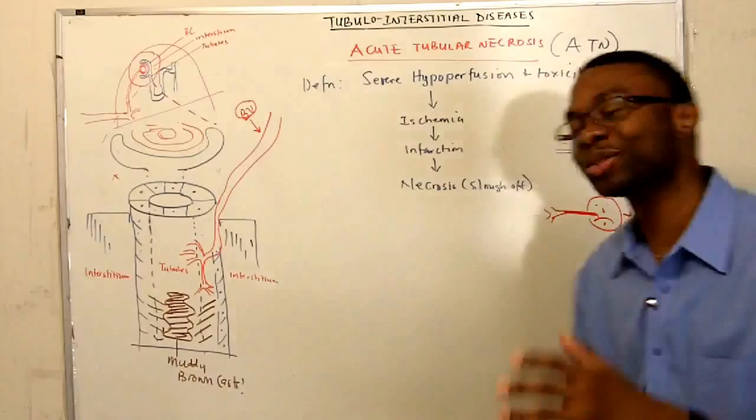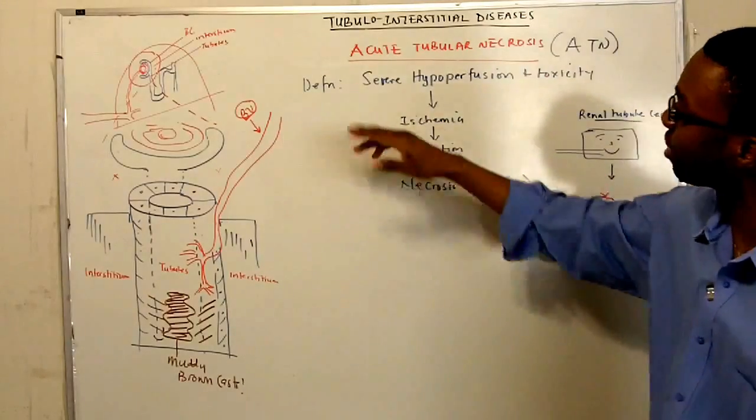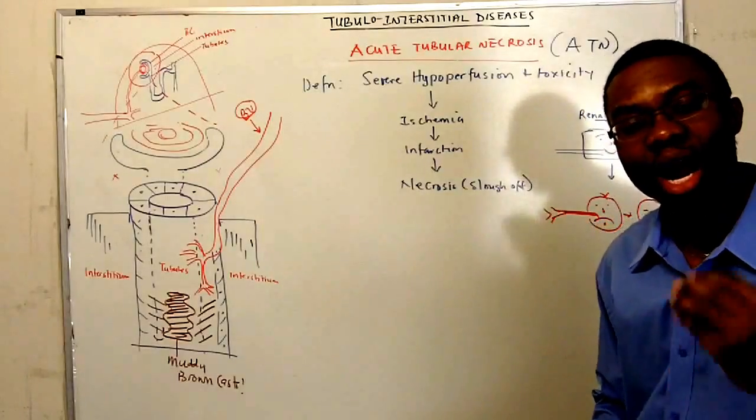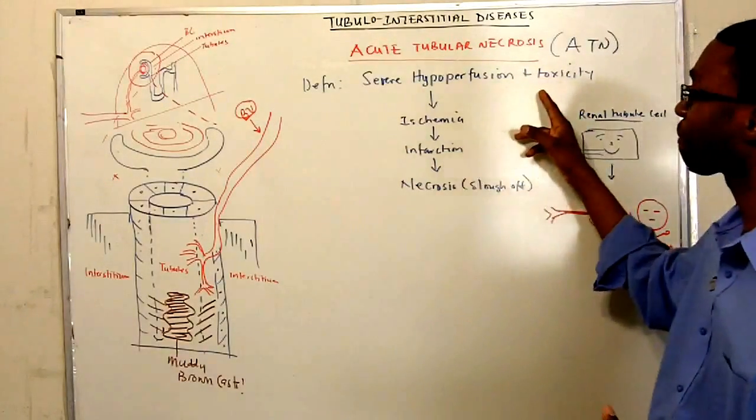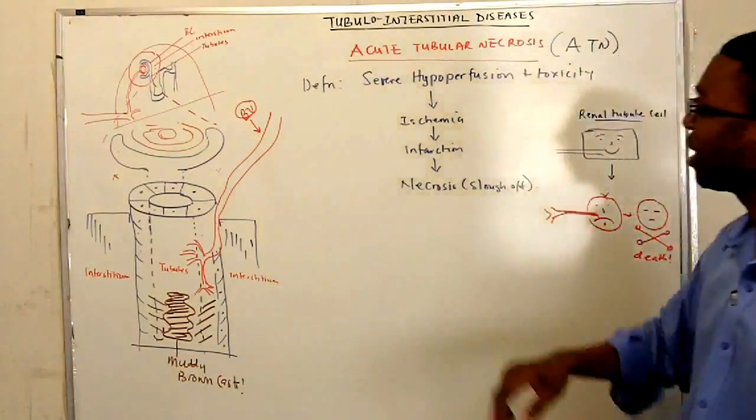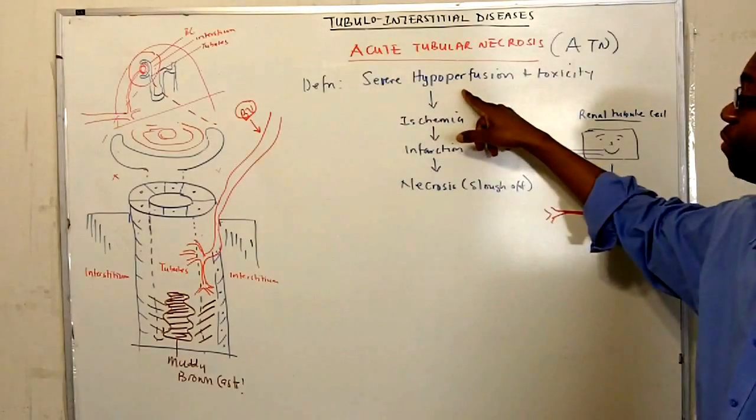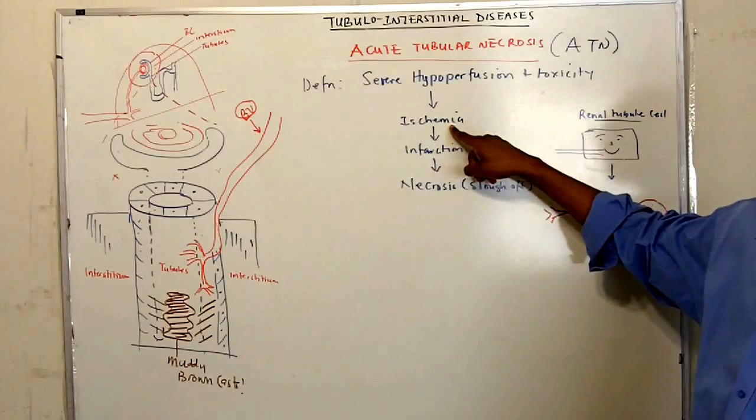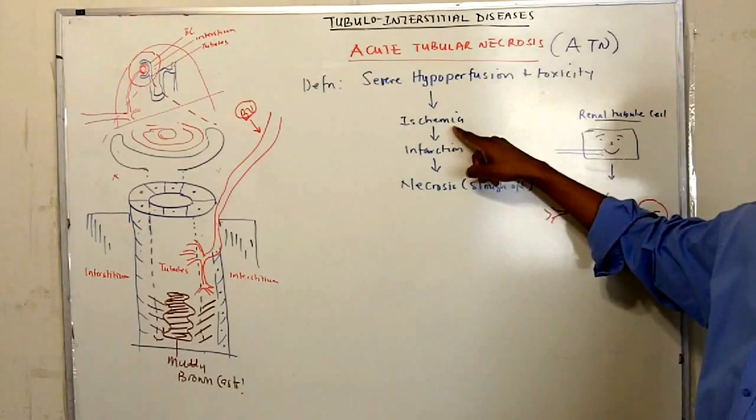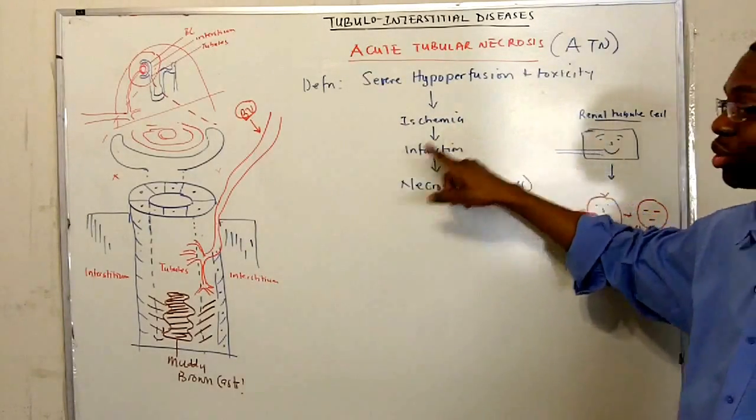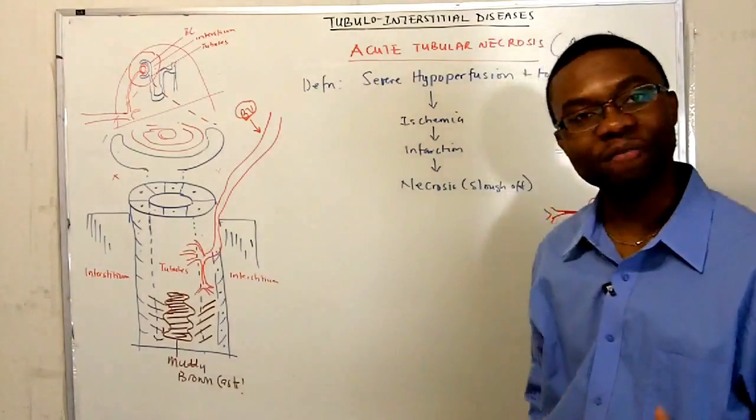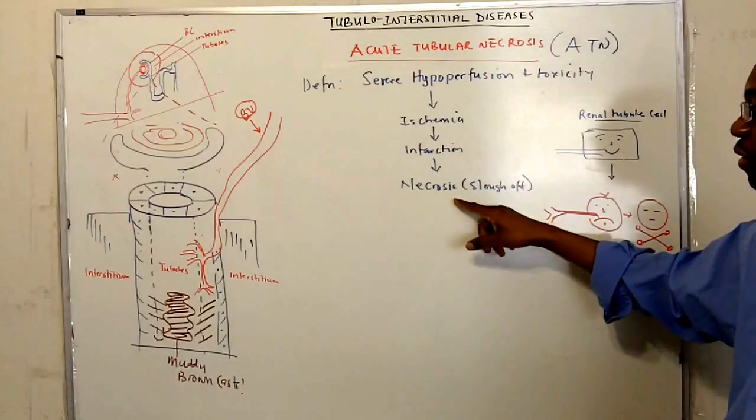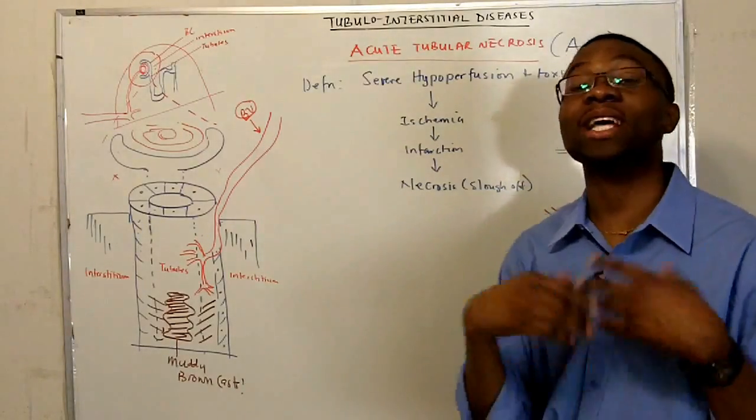But what caused them to die? Well, the definition of acute tubular necrosis is due to severe hyperperfusion to the kidneys plus toxicity. If you have severe hyperperfusion to the kidney plus a toxic compound, you develop ischemia. Ischemia has decreased blood flow, no nutrients, no oxygen to the tubules. These tubules want to be fed. Eventually, they will lead to infarction and develop necrosis and start to slouch off.